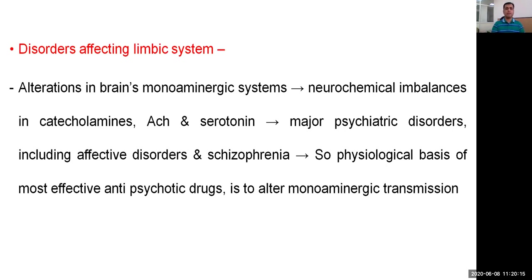These are the disorders affecting the limbic system. Among all the neurotransmitter systems present in the limbic system, it is the monoaminergic system that plays a very important role in regulating behavior and emotions. Alteration in the brain's monoaminergic system causes neurochemical imbalances in the form of altered catecholamines, acetylcholine, and serotonin, which causes major psychiatric disorders including affective disorders and schizophrenia. The physiological basis of most antipsychotic drugs is to alter monoaminergic transmission in order to treat these disorders.